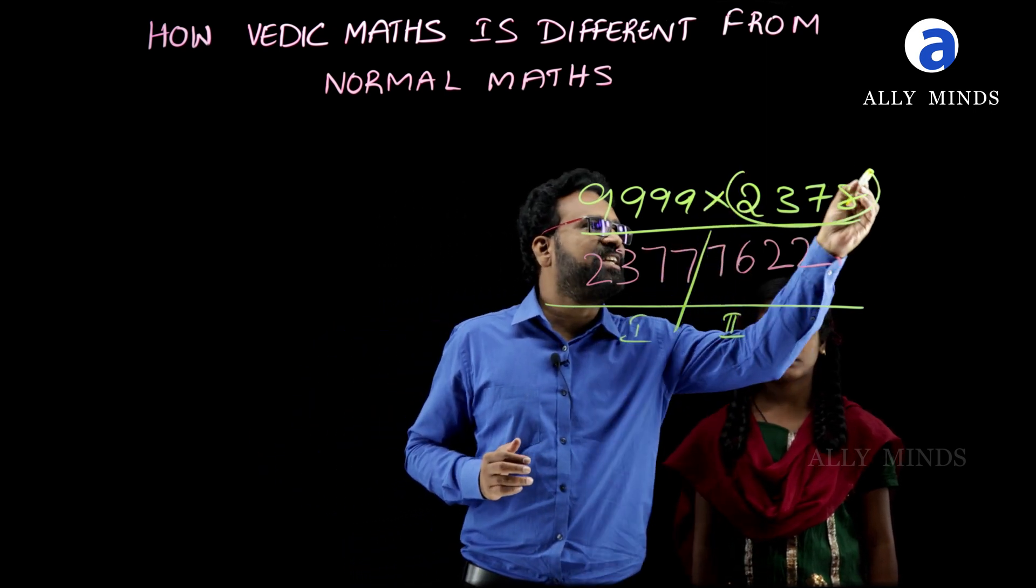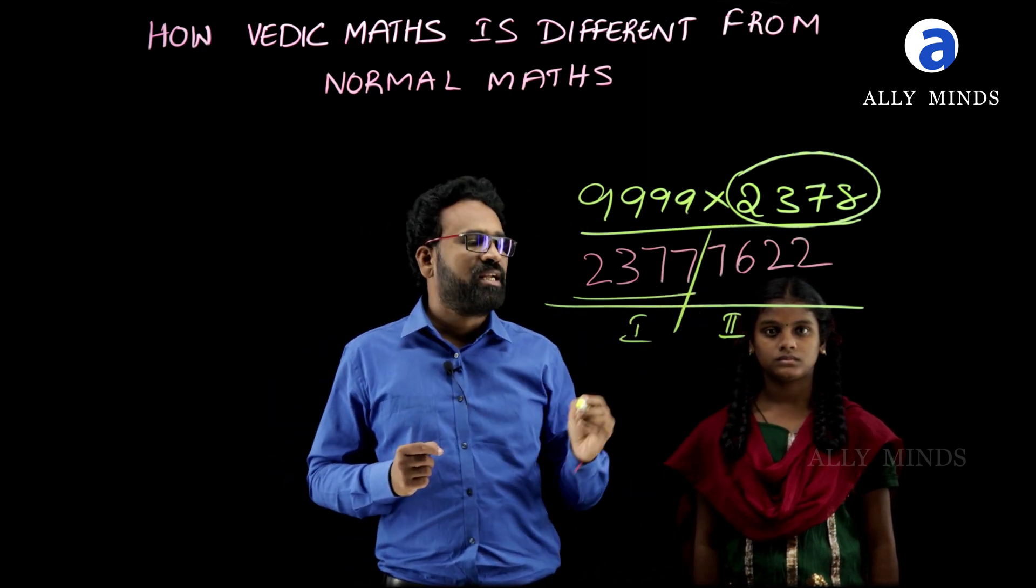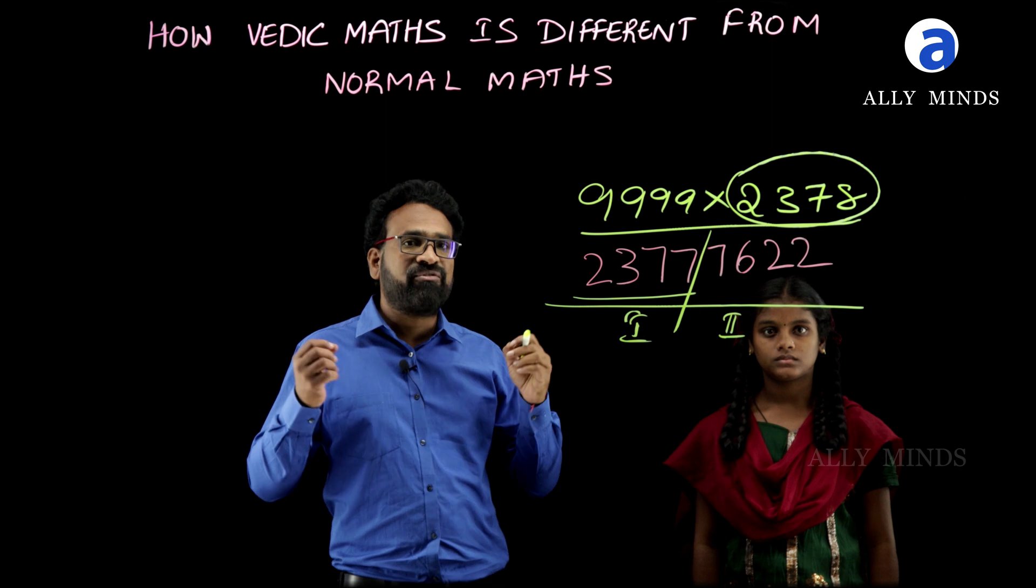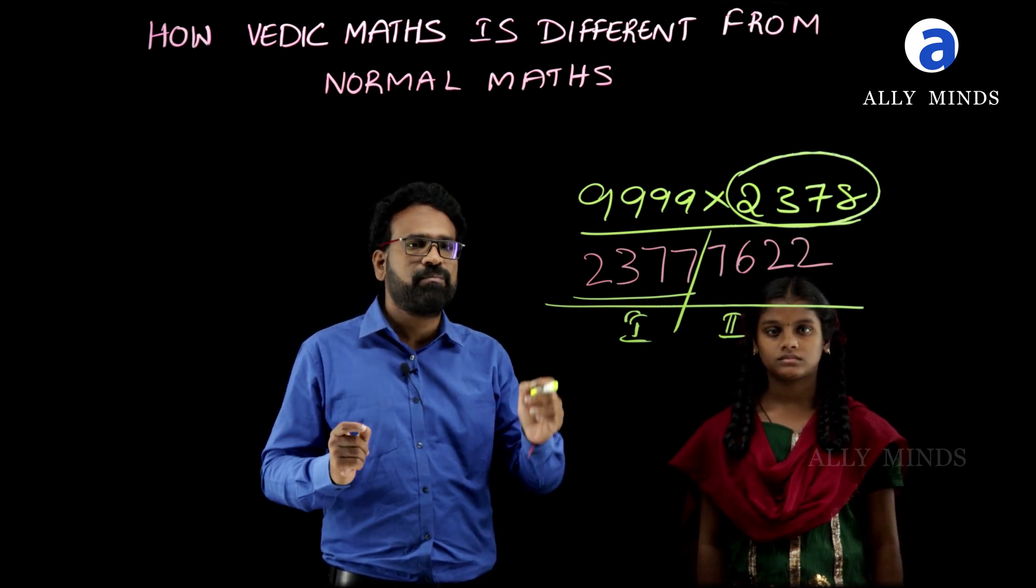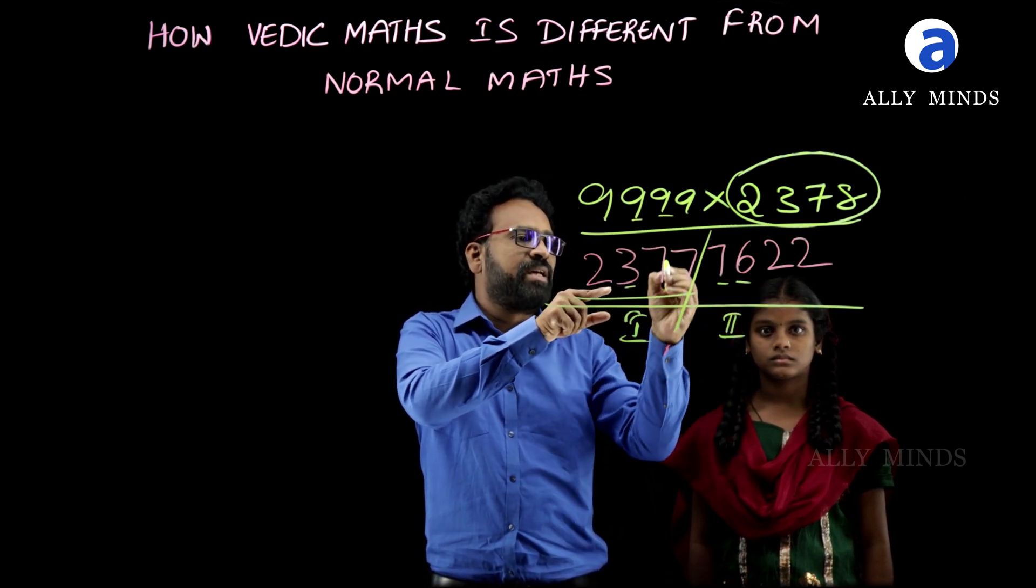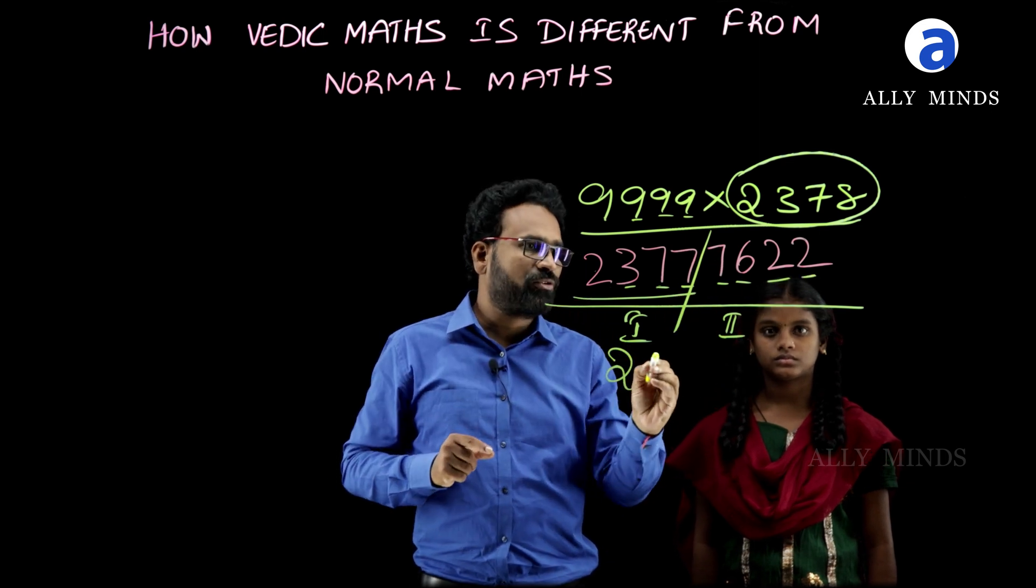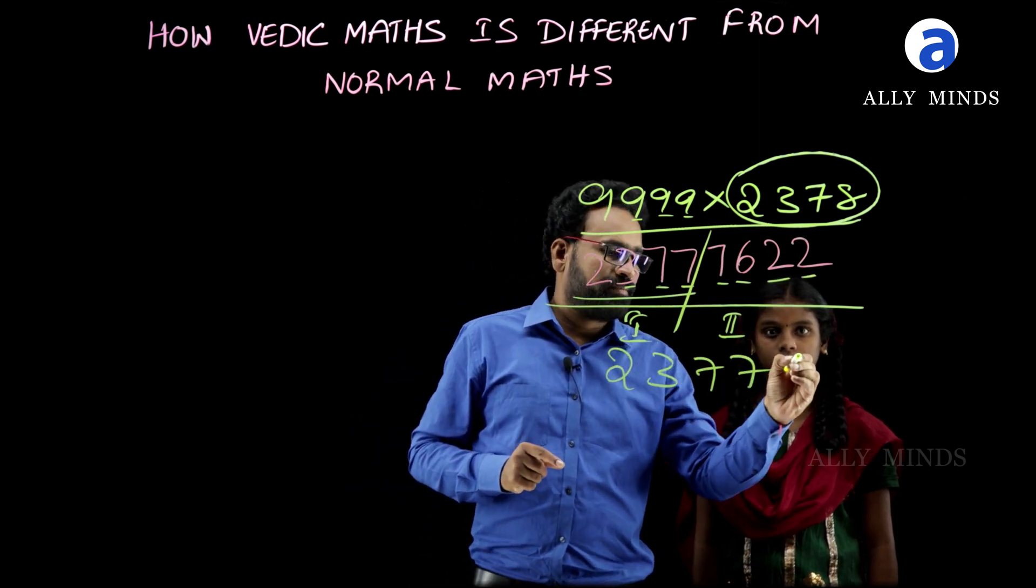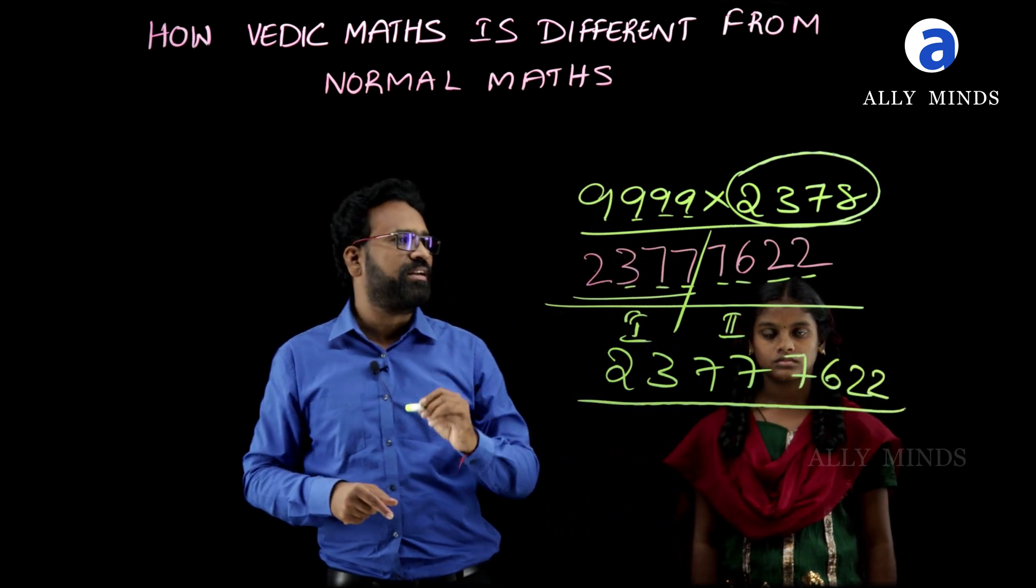Here we are having 2378. So, one less than 2378 is 2377. This is the first part of the answer. For the second part, we have to subtract each and every digit of the first part from nines. Here nine minus two is seven, nine minus three is six, and nine minus seven is two, and nine minus seven is two. This is the final answer: 2377, 7622.